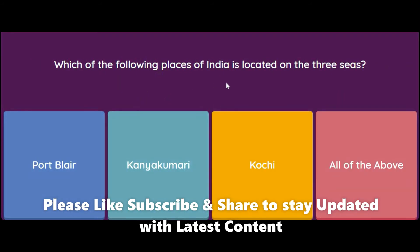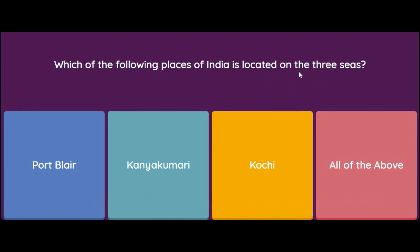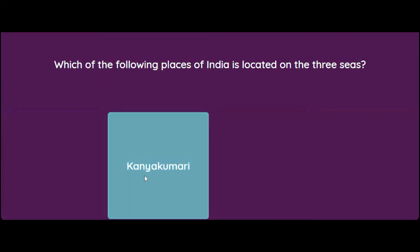Which of the following places in India is located where three seas meet? Options: Port Blair, Kanyakumari, Kochi, or all of the above. It's a very simple question — the correct answer is Kanyakumari, the place where three seas meet.